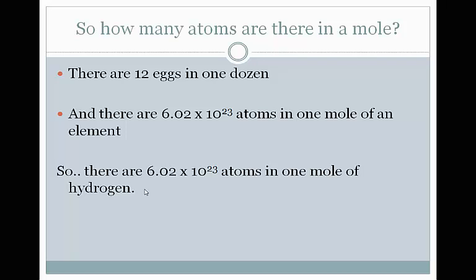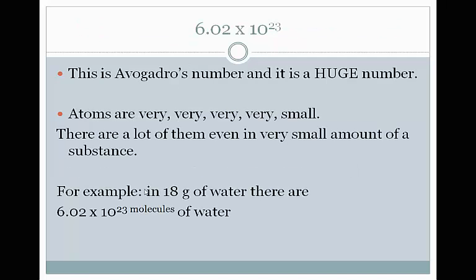So if I have one mole of hydrogen, I have 6.02 times 10 to the 23rd atoms. Where does 6.02 times 10 to the 23rd come from? This is called Avogadro's number, and it is a huge number. You have to keep in mind that atoms are very, very, very, very small. Even in a small amount of substance, you have a lot of them.